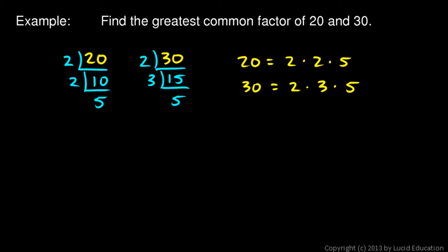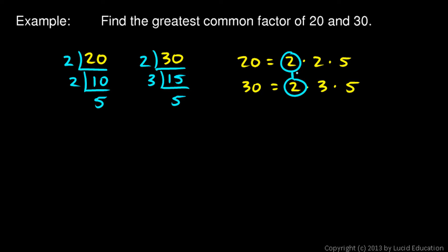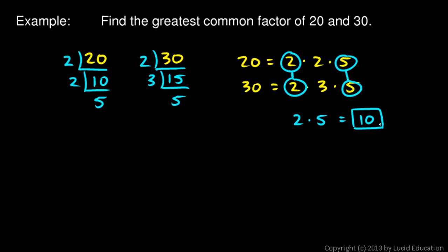Then what we do is take the two lists and match numbers up. See the 2 here and the 2 here — those match up, and the 5 and the 5. And that gives the answer. 2 times 5 is the answer, and 2 times 5 is 10. That is the greatest common factor of 20 and 30. 10 is a factor of 20, and it's also a factor of 30, and it is the largest number that is a factor of both numbers.